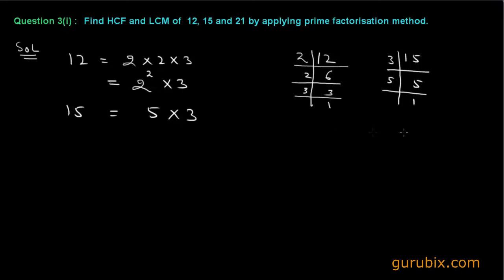Now we shall factorize 21. 21 can be divided by 3 and 7, so 21 can be written as 7 into 3.